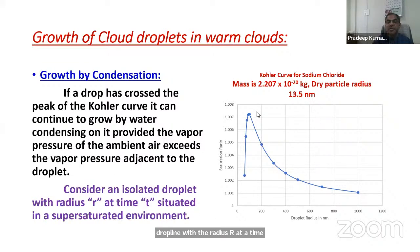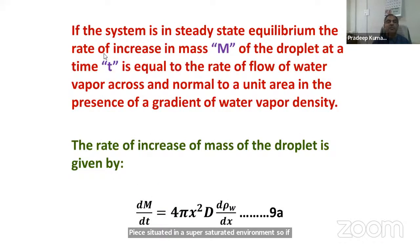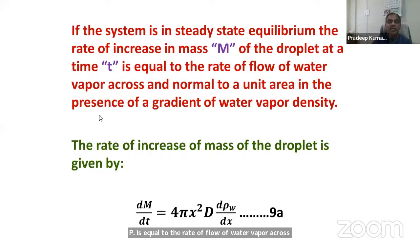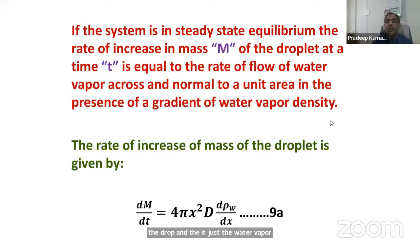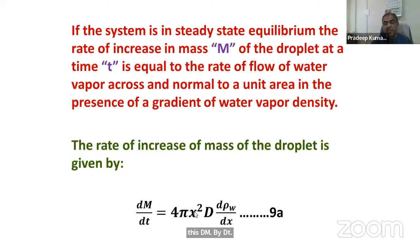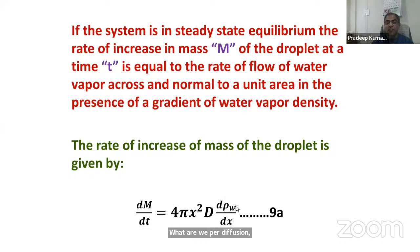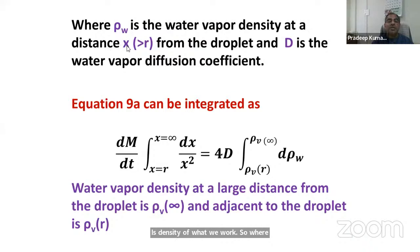The water vapor is flowing toward the drop and the drop continues to grow. The rate of increase of mass is given by dm/dt = 4πx² × D × (dρ_w/dx), where x is distance from the droplet center, D is the water vapor diffusion coefficient, and ρ_w is the density of water vapor at distance x greater than the droplet radius r. Integrating from x = r to x = infinity, where water vapor density at x = r is ρ_vr and at large distance is ρ_v∞, we get dm/dt = 4πrD(ρ_v∞ − ρ_vr).